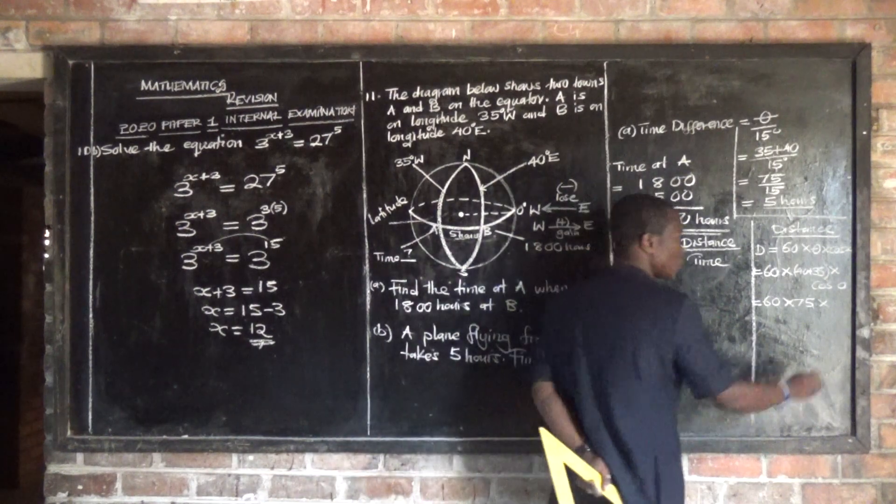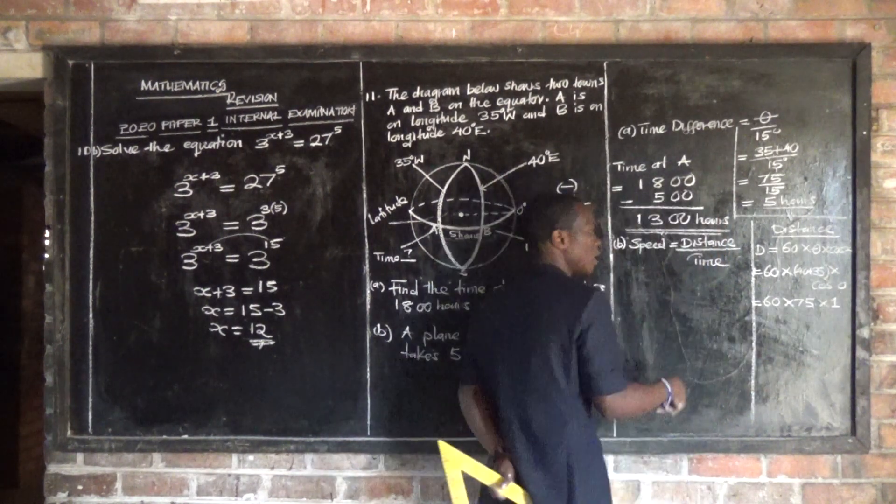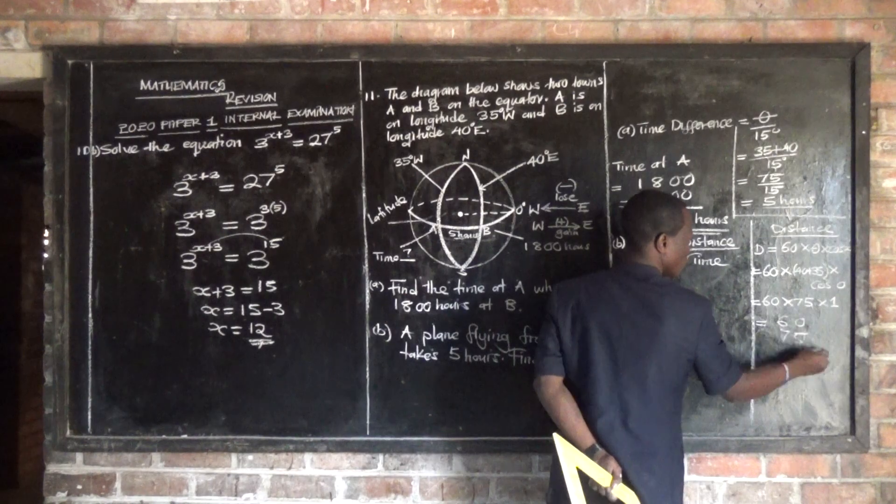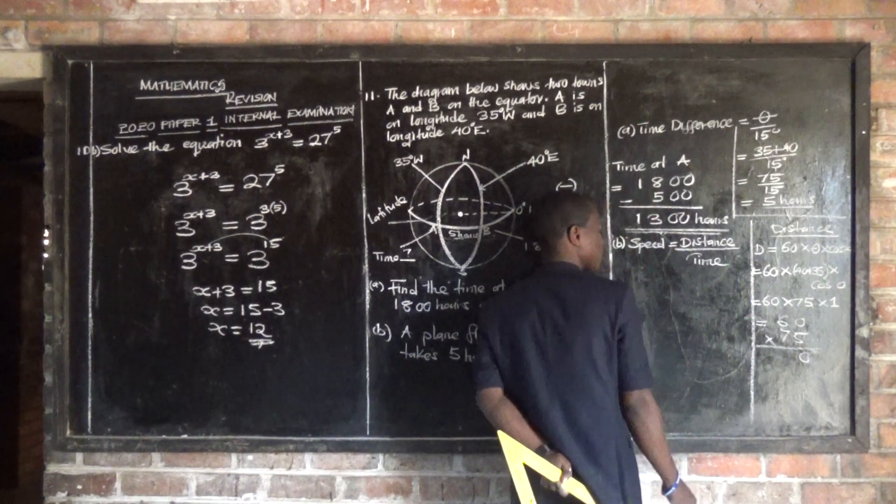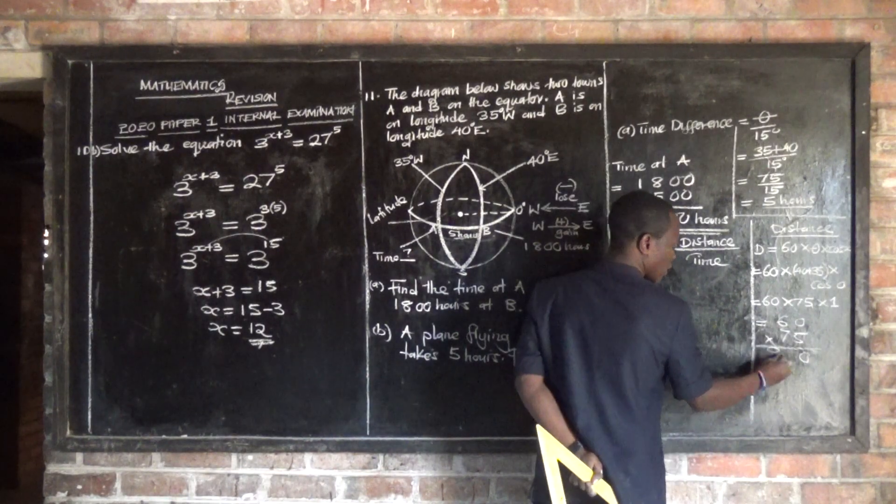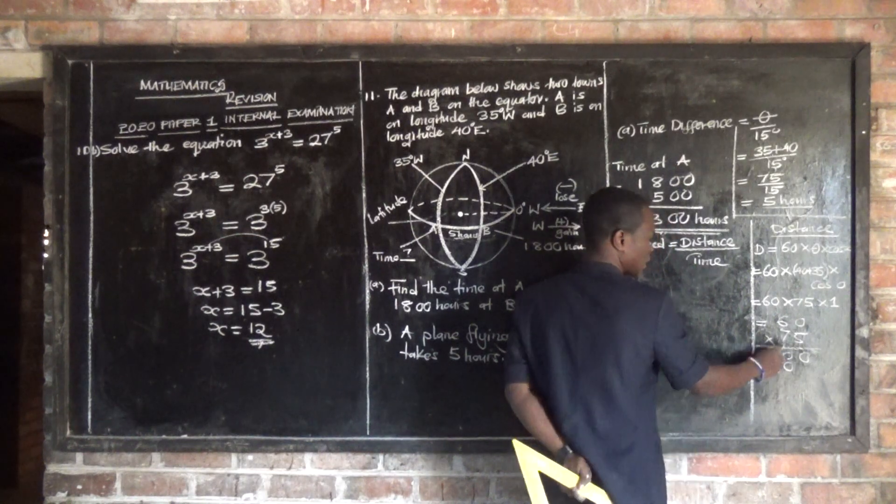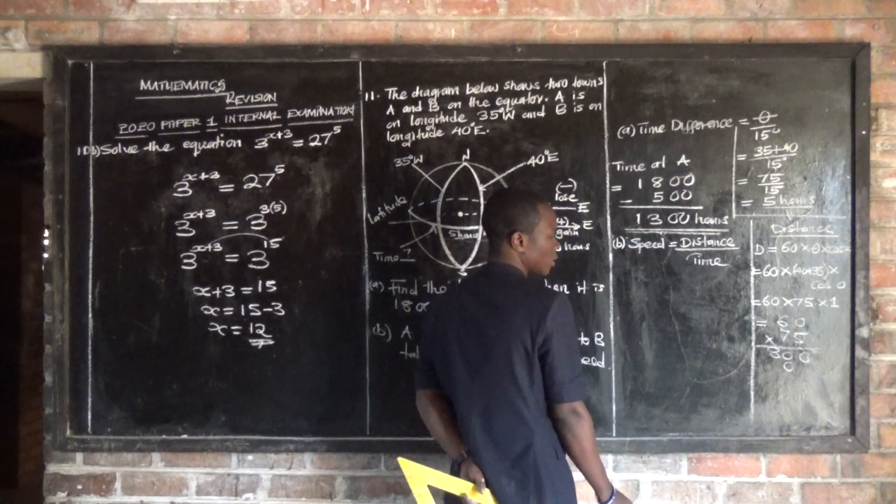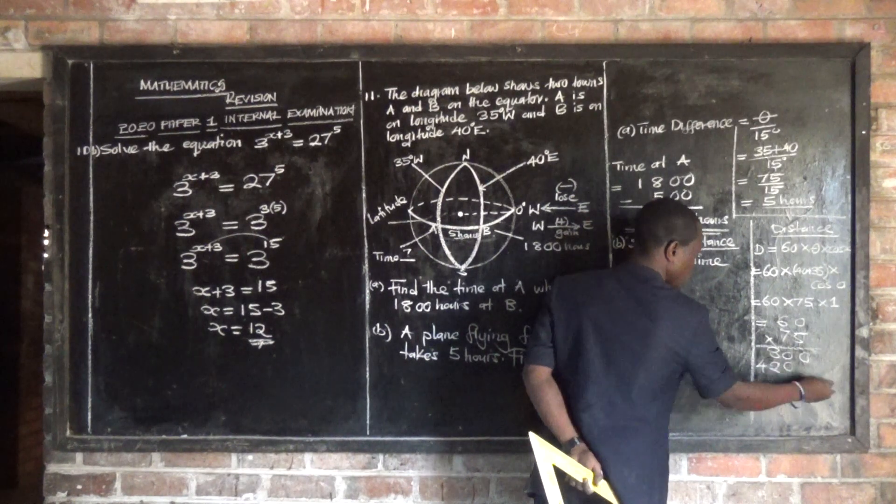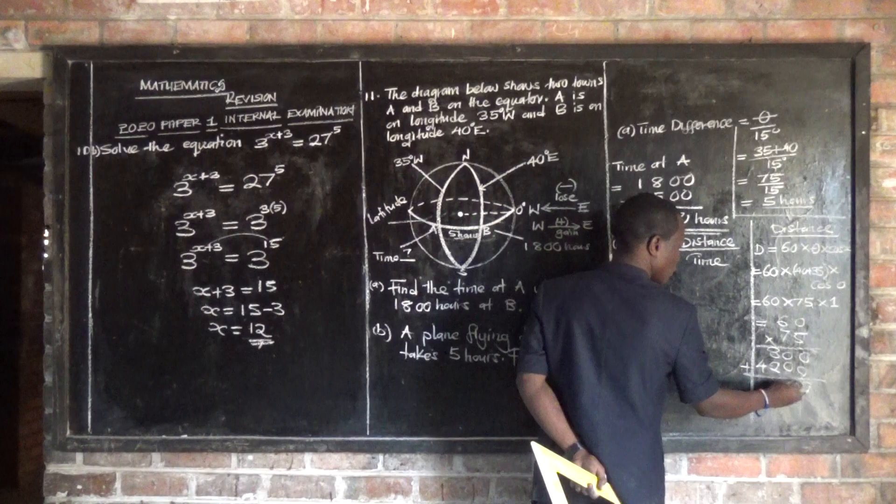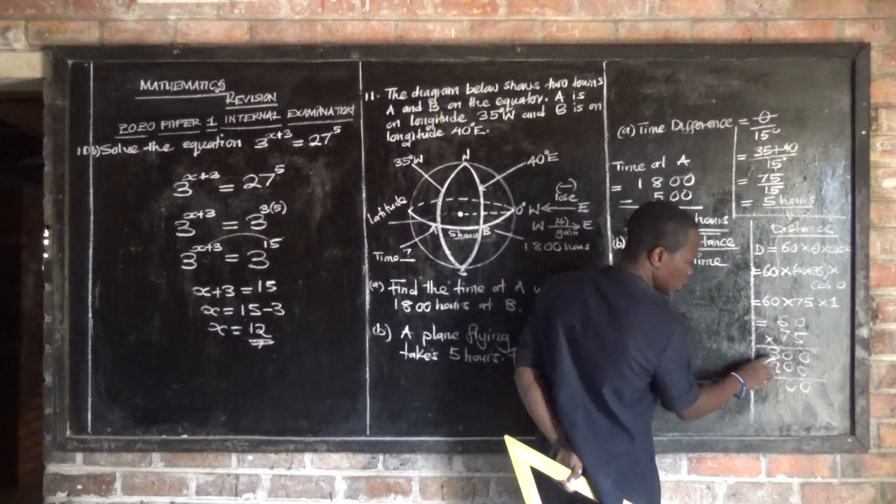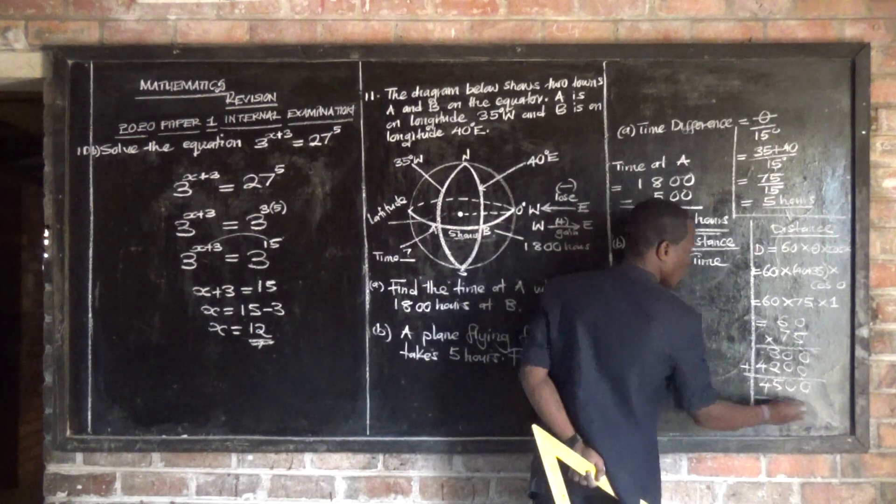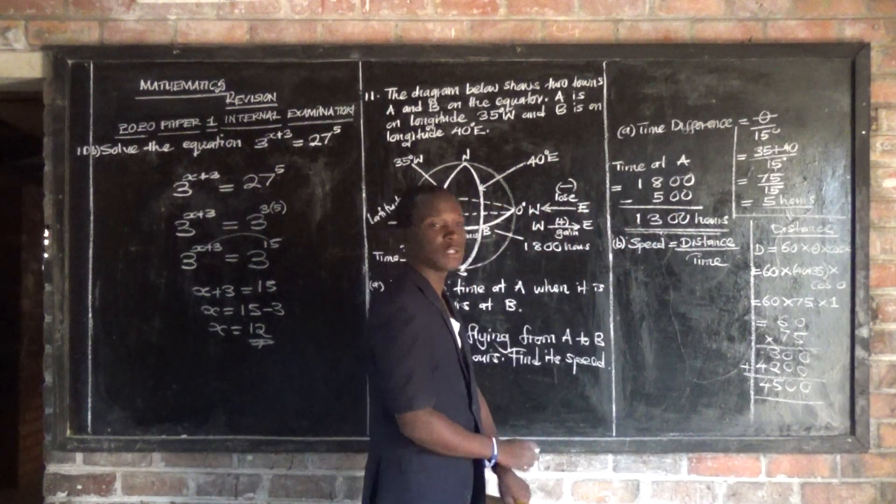Then times cos 0. Cos 0 is 1. Then you can simplify and say 60 times 45 times 1. 60 times 45. 45 times 6 is 270, so we get 2700. Then this is 3 plus 2, 5, 4 plus 0, 0. 4500 nautical miles. This is our distance.